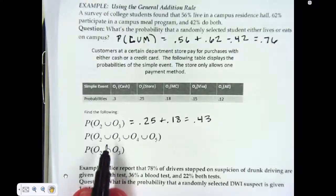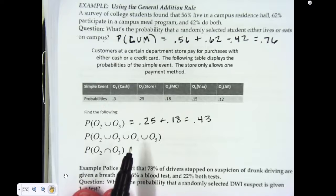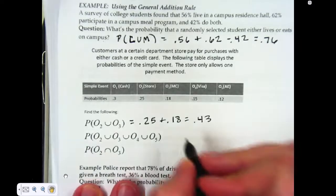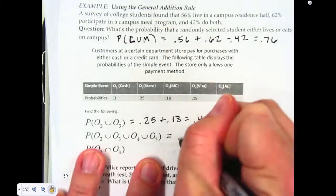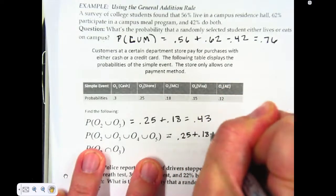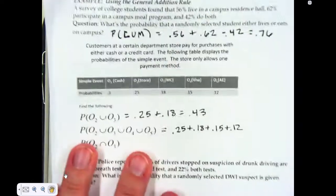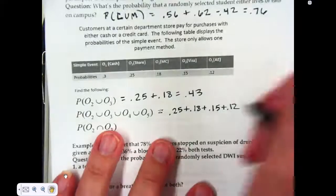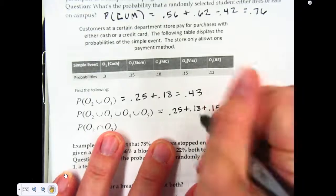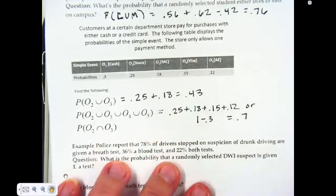For this one, they want the probability of the second payment type, the third, the fourth, or the fifth. I could add up all four of those, but a quicker way is to use the complement. My first choice would be 0.25 plus 0.18 plus 0.15 plus 0.12. Or, I'd rather use the complement, which is 1 minus 0.3. Either way, you get a probability of 0.7.